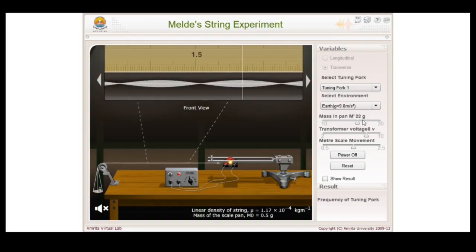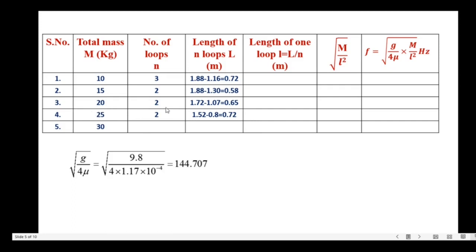Let us continue the experiment with mass 25 grams. Now you see two well defined loops along the length of the string. Note down the left and right nodes reading. I am going to adjust the scale position slightly. The left node reading is 0.8 and the right side reading is 1.52. Enter the readings in the table: 1.52 minus 0.8 equals 0.72.